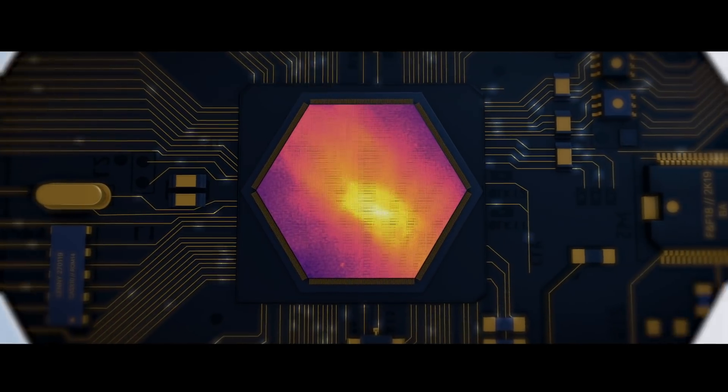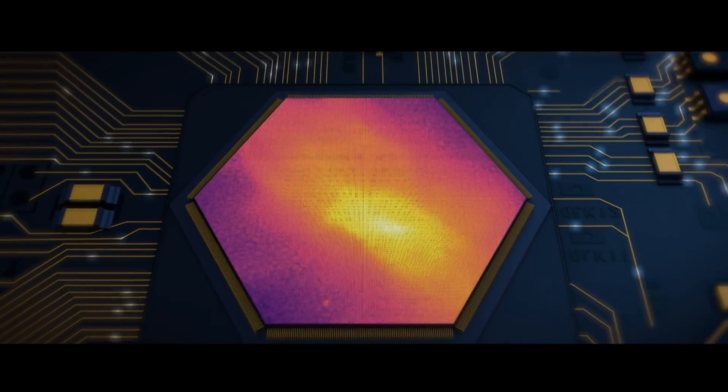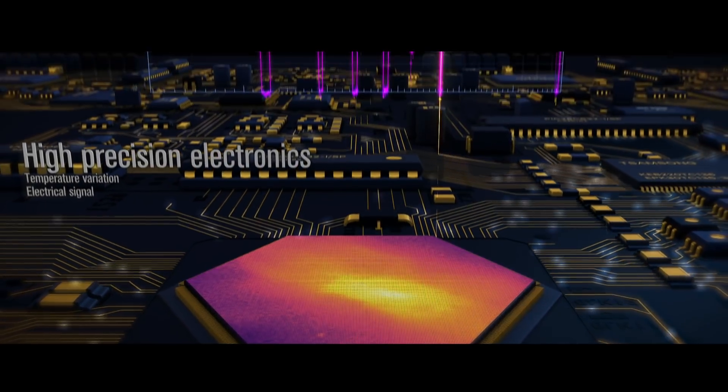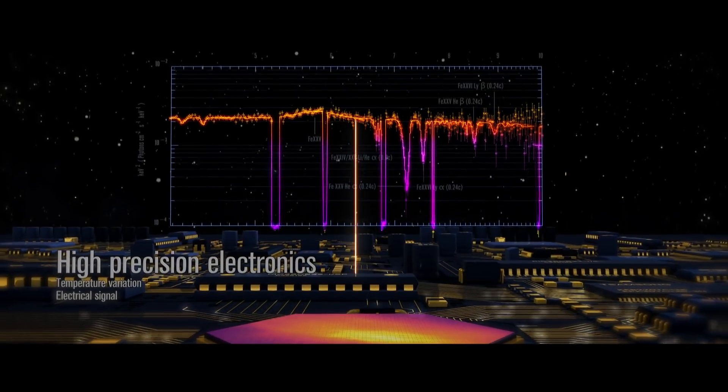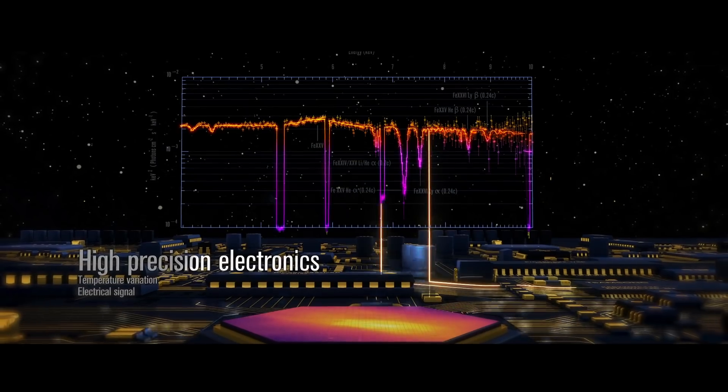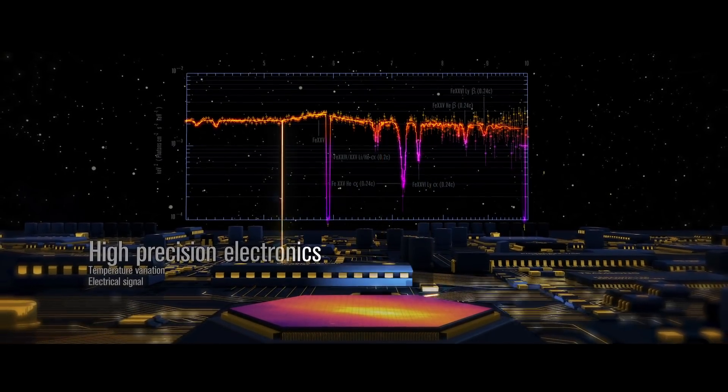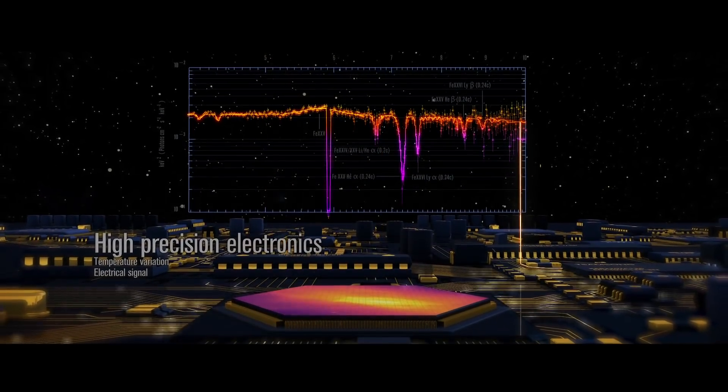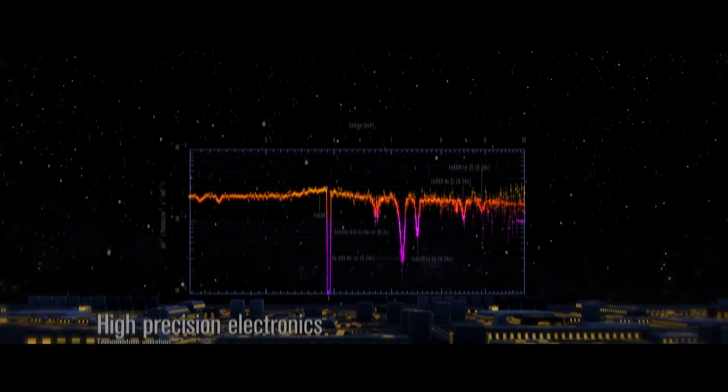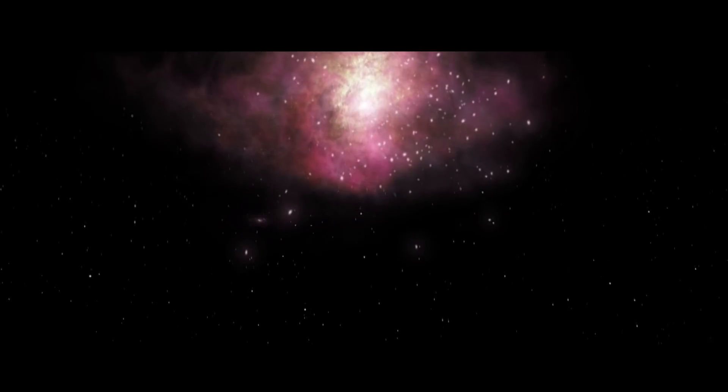The temperature increase measured by the sensor is converted into an electrical signal that is read out by high-precision electronics. This temperature variation is proportional to the energy of the absorbed X-ray. The high-precision measurements of these energies allow us to explore the regions from which the X-rays are emitted.